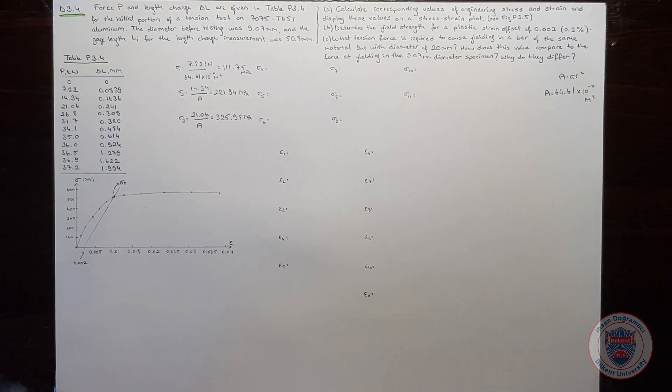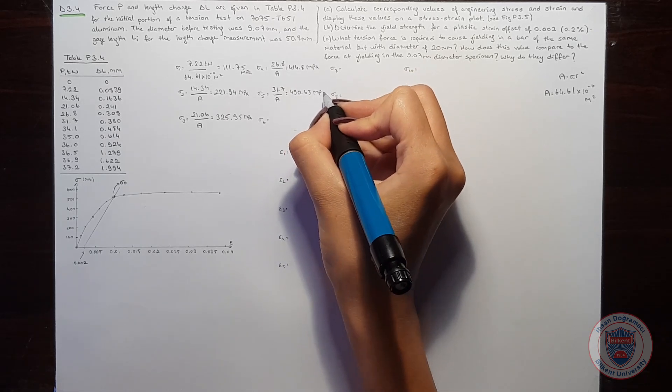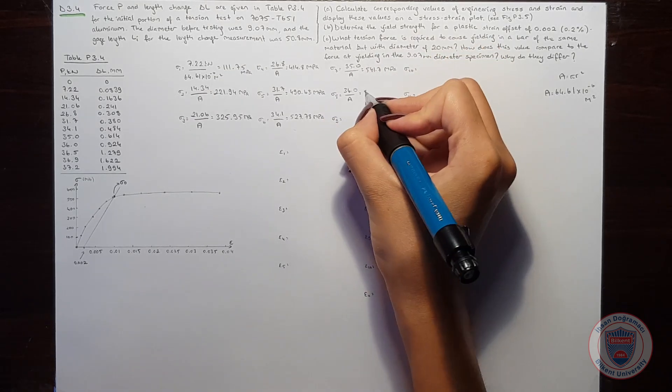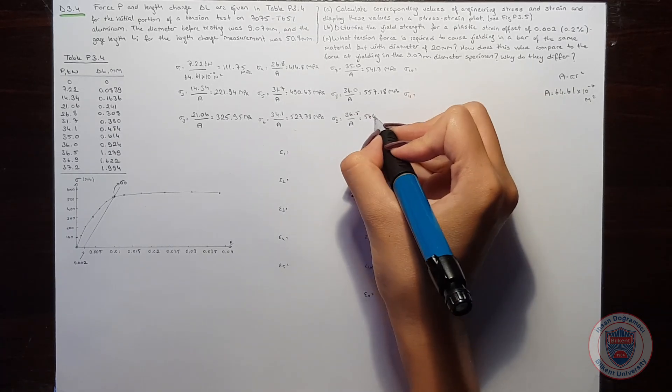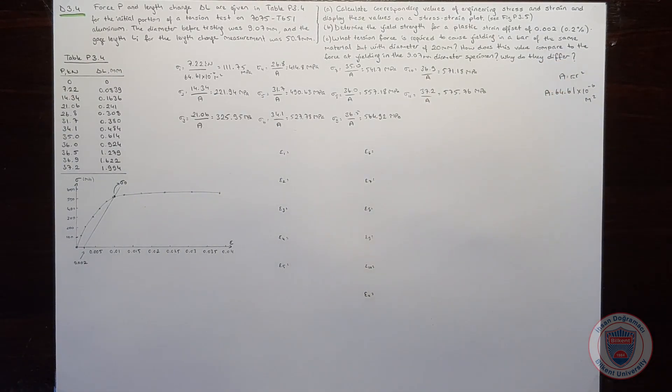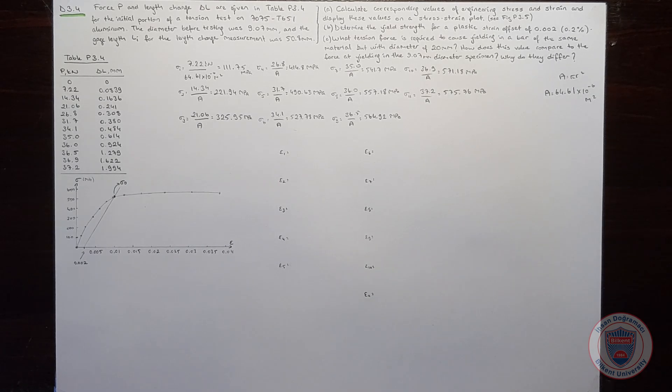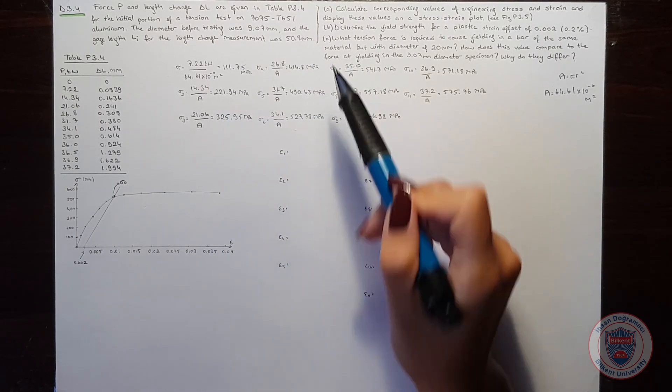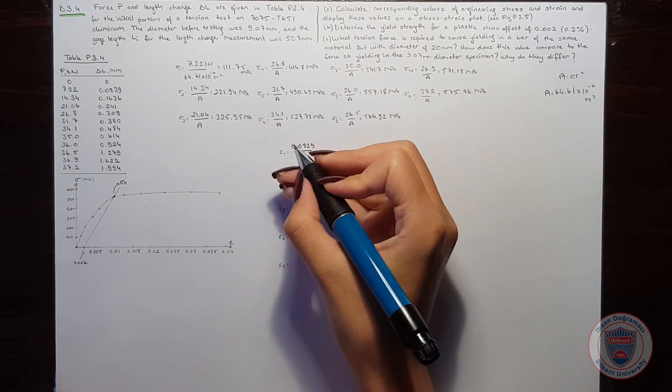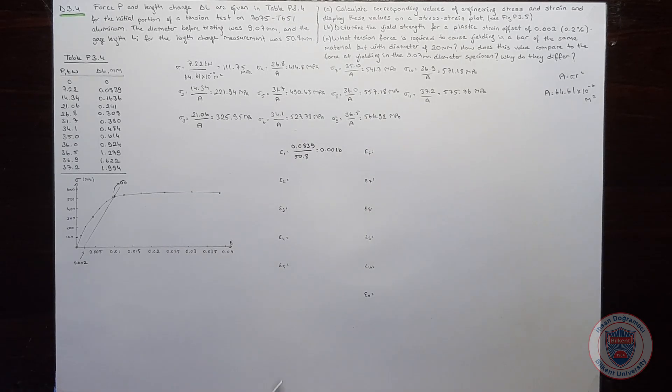We will do the same for all stresses. And then we will calculate the strains. We know that strain is equal to change in length over the initial length, and we know the initial length is 50.8 mm. So, we can say that epsilon 1 is 0.0016 and we will do the same procedure for all strains.